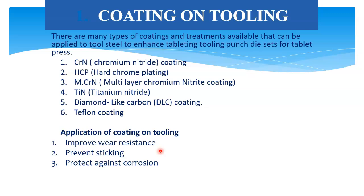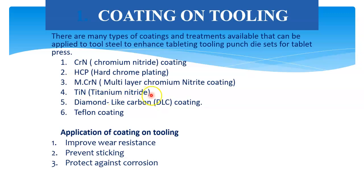Now, coating on tooling. There are many types of coating and treatment available that can be applied to tool steel to enhance the tablet tooling punch die set for tablet press. There are six types of coating on tooling: chromium nitrate coating, hard chrome plating coating, multi-layer chromium nitrate coating, titanium nitrate coating, and diamond-like carbon coating. The applications of these coatings are: they improve the wear resistance of punches and dies, prevent sticking, and protect against corrosion.